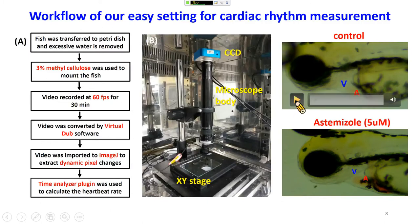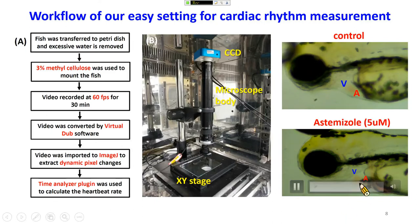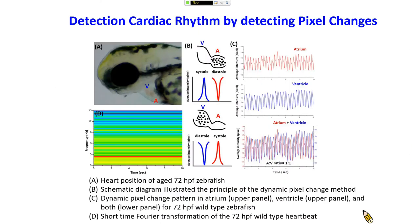This video shows the normal heartbeat pattern of the control fish — atrium to ventricle one-to-one. But after chemical treatment with measles-equivalent compound, you can see the fish already has arrhythmia, showing irregularity of atrium and ventricle beating. Based on this video, we can extract information based on the image dynamic pixel changes.